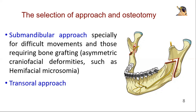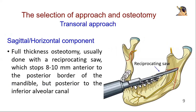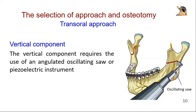Alternatively, the procedure can also be performed using a transoral approach for some simple movements. The sagittal inferior cut for inverted L-osteotomy can easily be performed from a transoral route. It is a full thickness osteotomy usually done with a reciprocating saw, which stops 8-10 mm interior to the posterior border of the mandible but posterior to the inferior alveolar canal. The vertical component requires the use of an angulated oscillating saw or piezoelectric instrument when performed from a transoral approach.